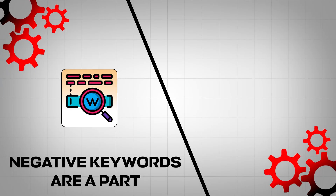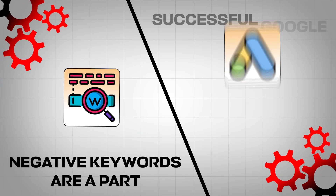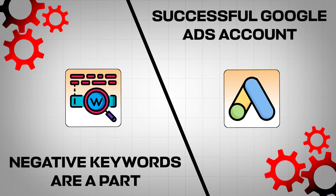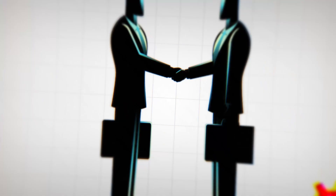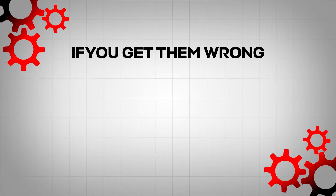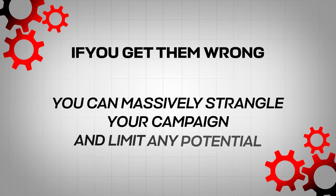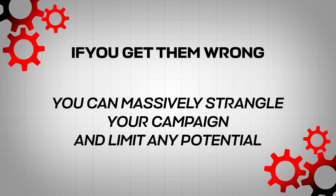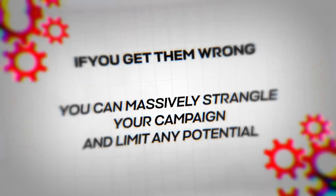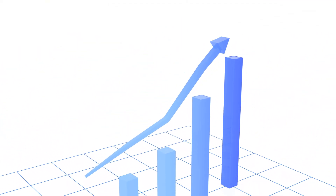Negative keywords are a fundamental part of running a successful Google Ads account. Get them right and you maximize your traffic quality, making sure your ads are only showing for the right types of term for your business. But if you get them wrong, you can massively strangle your campaign and limit any potential of growth in your account for the long term and in the short term as well. It's a really crucial part of account development.